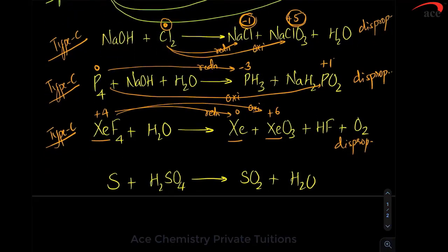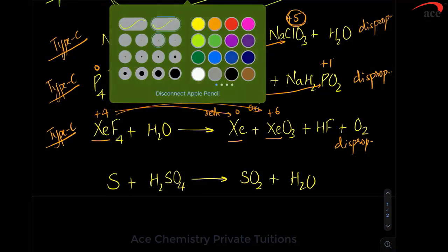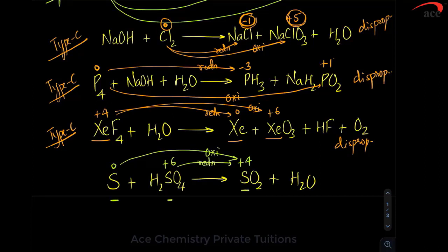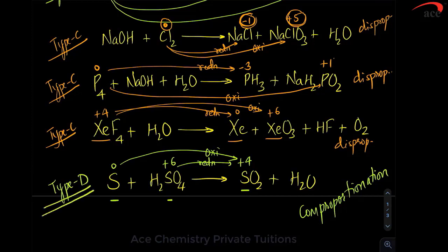Coming to more examples: sulfur here is 0, sulfur here is +4, and sulfur here is +6. Sulfur is getting oxidized and sulfur only is getting reduced — two different oxidation states converging into one. Such a reaction is called comproportionation, and we will call this a Type D reaction.